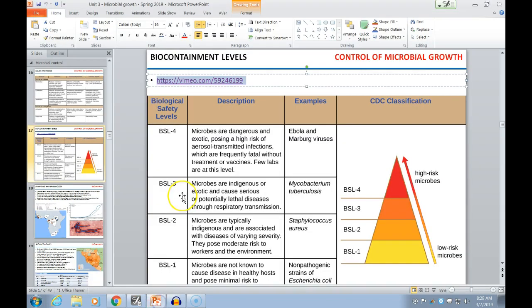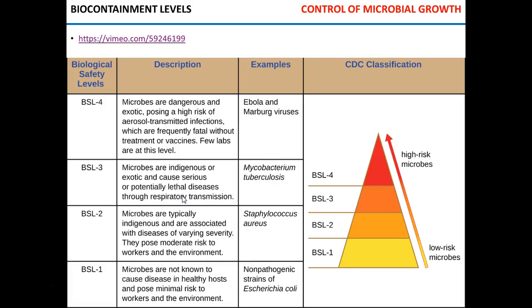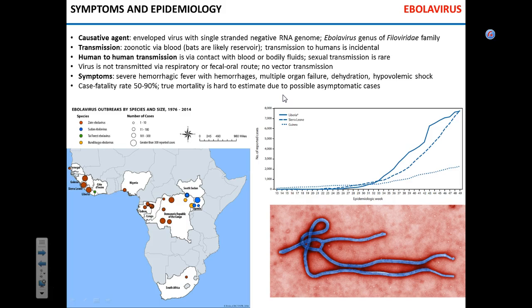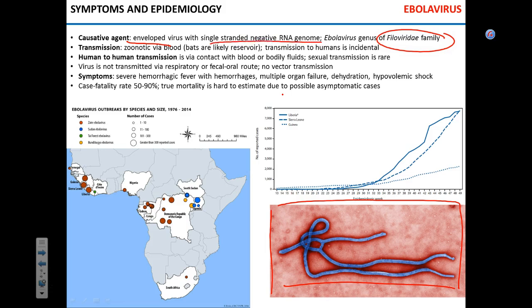The BSL-4 pathogen we're discussing is the Ebola virus. Ebola belongs to the family Filoviridae — 'filo' comes from filamentous, as the virus has a filamentous structure. It has an envelope and a single-stranded negative-sense RNA genome. This virus is a zoonotic virus.